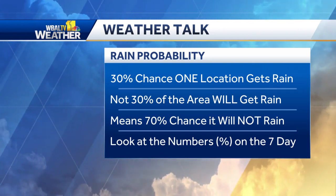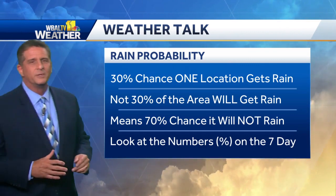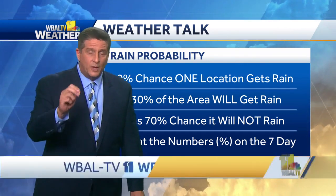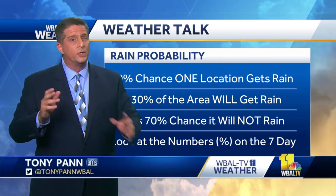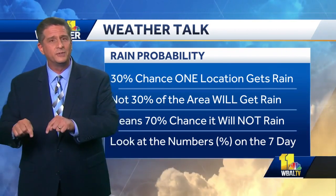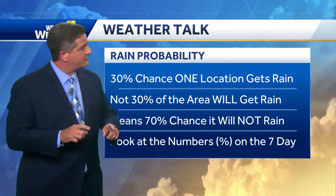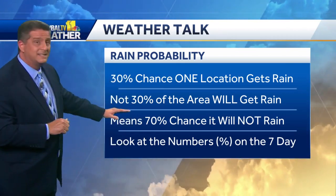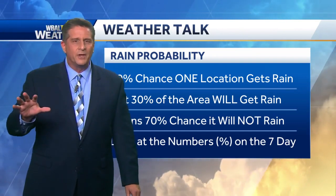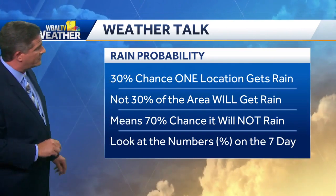So what does it really mean when we say a 30% chance for precipitation? It means there's a 30% probability that any one location in the viewing area will get rain. If your house is one location in our viewing area, you have a 30% chance for rain in that spot. It does not mean that 30% of the entire area will get rain — a lot of people think that, but that's not what it means.